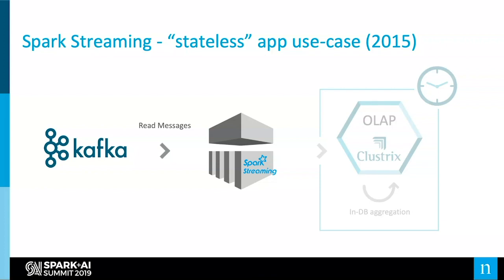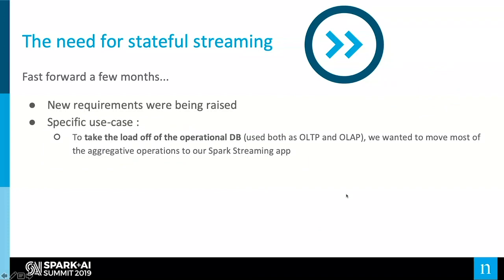That was the next phase for stateless applications. All we did was read the messages, do some simple transformations, write them to our OLAP database, and then every period — every few hours or every day — we did the same aggregations we used to do. However, when you fast-forward a few months, new requirements were raised. The specific use case was that we used Clustrix both as our operational database and as our OLAP database, and that put a lot of pressure on it. What we wanted to do was take the load off the operational database and move most of the aggregation operations into our Spark streaming applications, which we know are scalable.